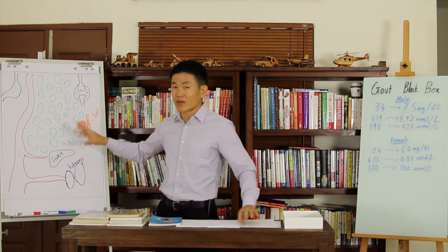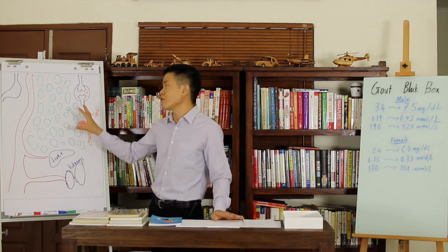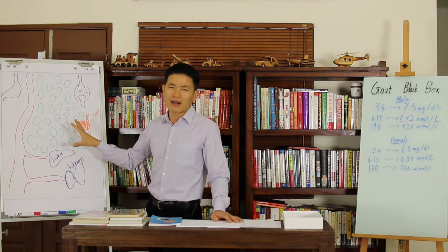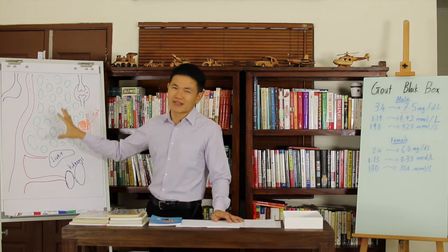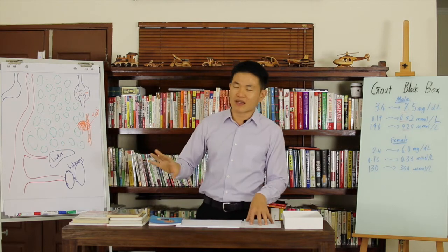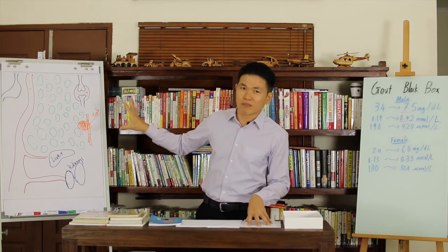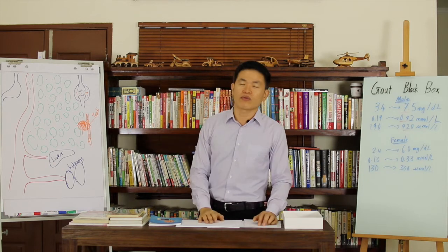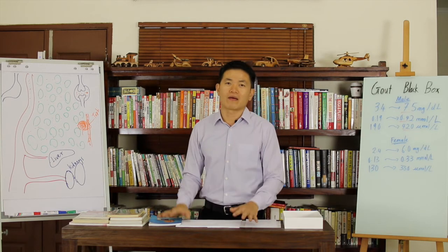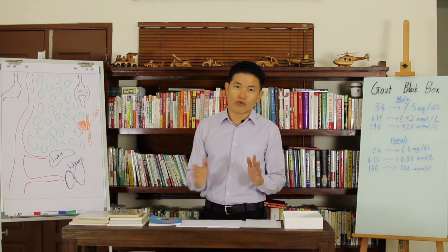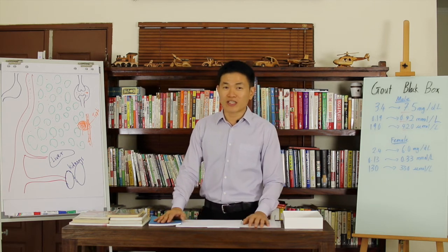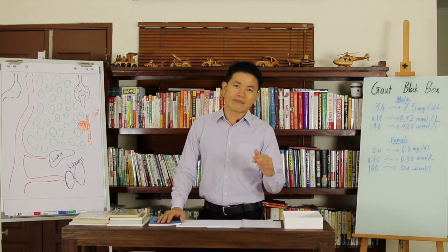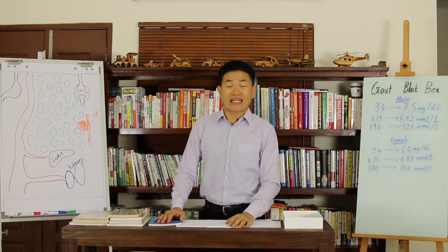It's very important to understand the gout black box concept because it gives you a better picture that gout can actually be cured once you remove the crystals. But the process takes time and patience, and understanding this diagram is very important — it's the blueprint. You have a map now; you just need to follow through. We'll move on to the next chapter, which covers the current medical solutions or medical treatment for gout and its limitations.